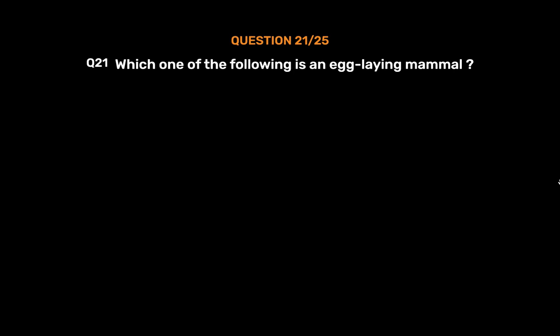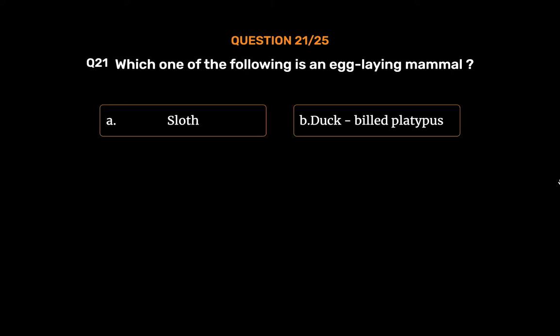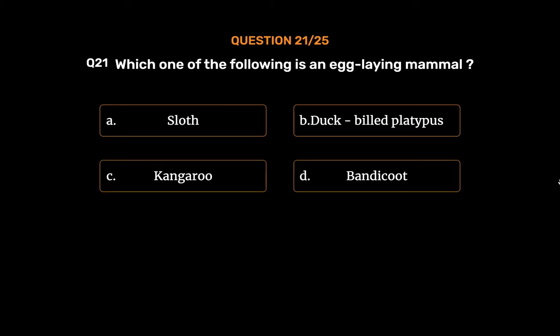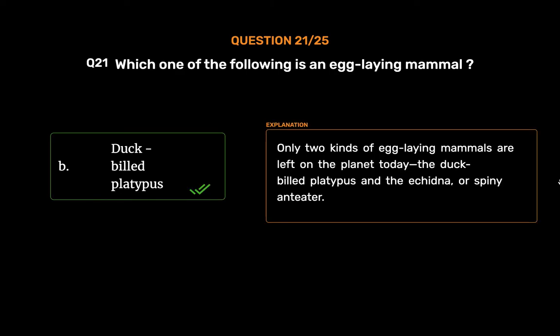Question No. 22: Which one of the following is an egg-laying mammal? Option A: Sloth, Option B: Duck-billed platypus, Option C: Kangaroo, Option D: Bandicoot. The correct answer is Option B, Duck-billed platypus. Only two kinds of egg-laying mammals are left on the planet today: the duck-billed platypus and the echidna, or spiny anteater.